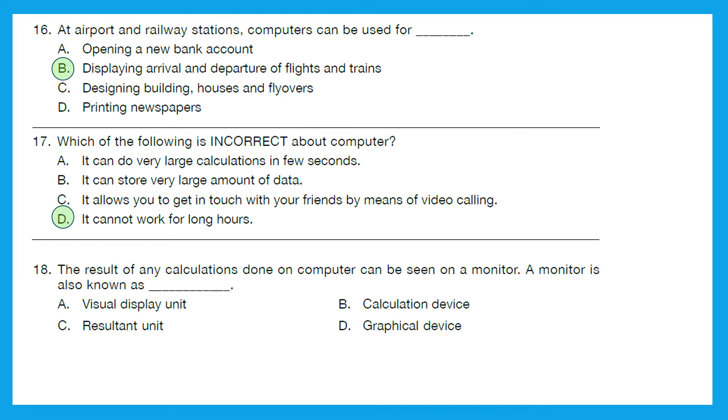Question 18: The result of any calculations done on computer can be seen on a monitor. A monitor is also known as - visual display unit, calculation device, resultant unit, or graphical device? The right answer is option A, visual display unit.